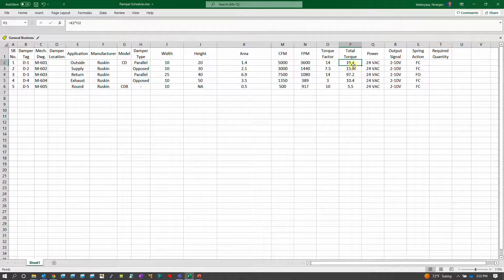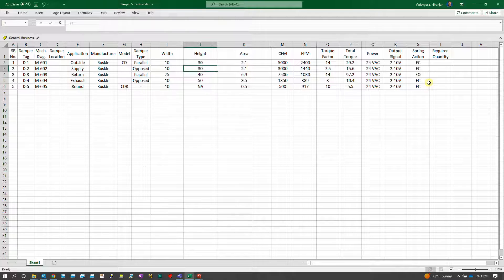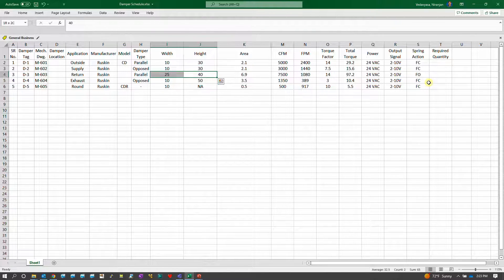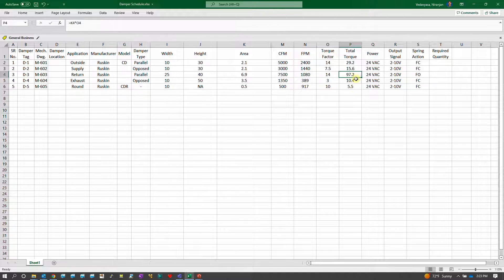Let's see in our case due to different dimensions how the sizing goes of the actuator. You can see the total torque which is getting calculated from 14 getting multiplied to the area. If I change this area from 20 to 30, you can see my torque getting increased. For a bigger damper here with the area which is bigger than this you can see the torque going up to almost 97.